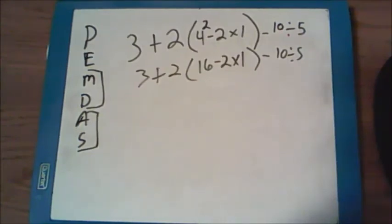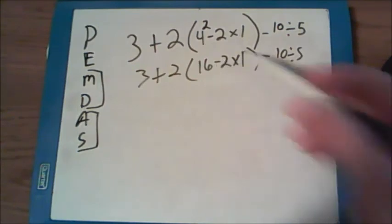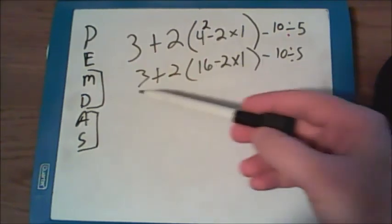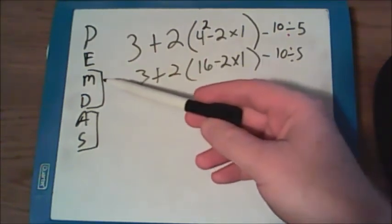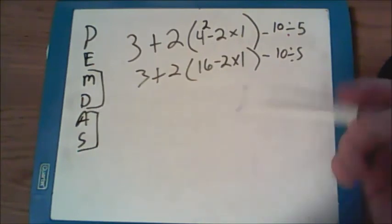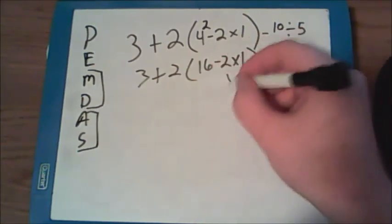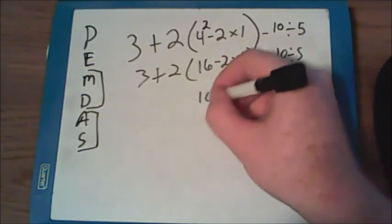At this step, we still have parentheses to worry about. And inside of the parentheses, I will either subtract or multiply. And again, according to the order of operations, multiplication comes before the subtraction. So I do 2 times 1 is just 2, bring down everything else.